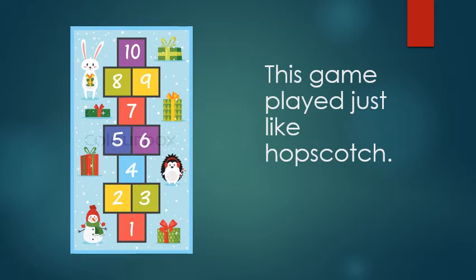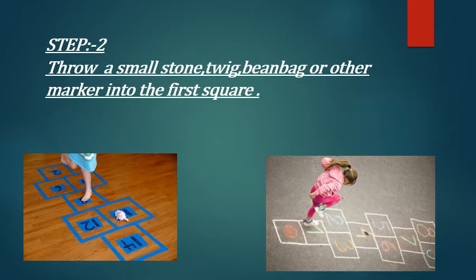So then what you have to do is, once you have made hopscotch on the floor, you have to throw a small stone, twig, bean bag or other marker into the first square. As you can see in this picture now, like that only you have to place that object on the first square.